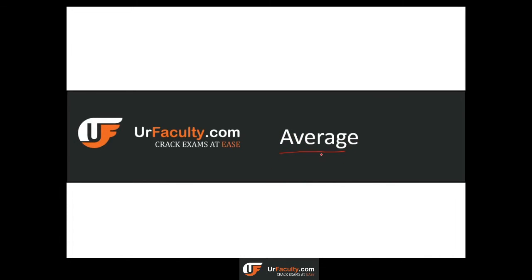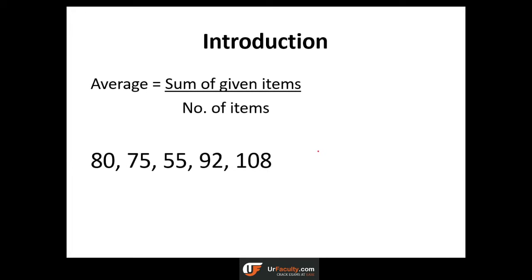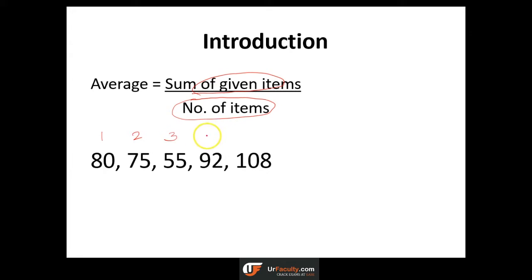How do we arrive at an average? It's pretty simple. An average is basically sum of given items by total number of items. Let's take an example. We are given 5 items here: 80, 75, 55, 92, 108. These could be your marks, price of an item, runs scored by a cricketer, or score of some player in a tournament.